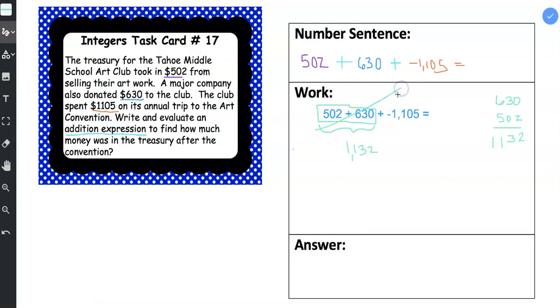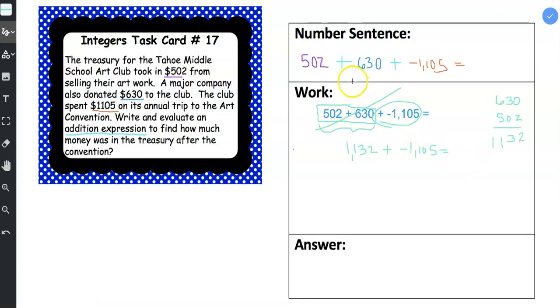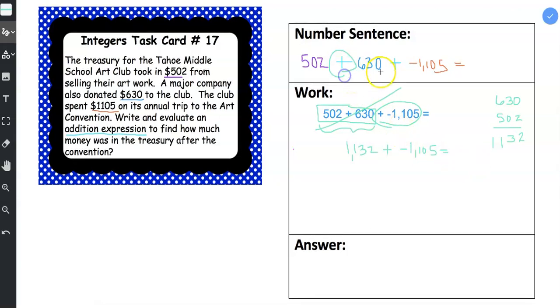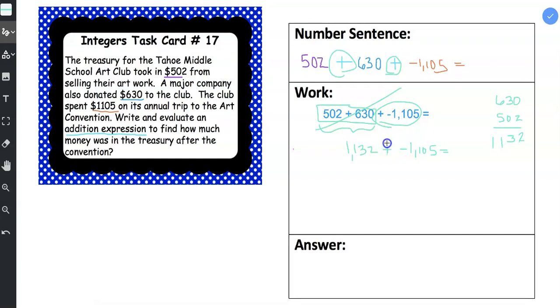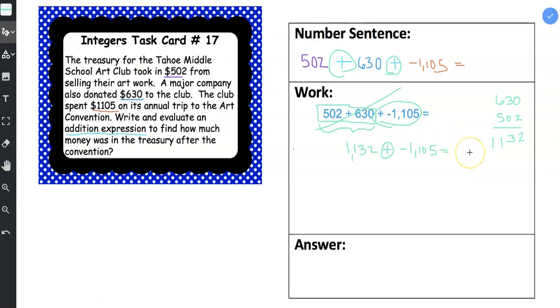And we're finished with that part, and the next part is the plus a negative $1,105. And the benefit of starting this out as an addition problem is that in between, we already have addition. So we can already apply our addition rules, we don't have to change subtraction to addition, it's already addition.